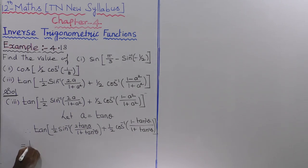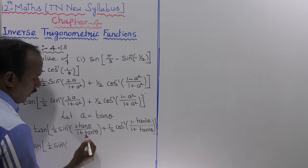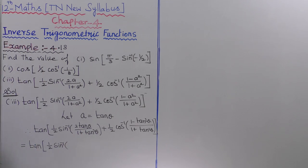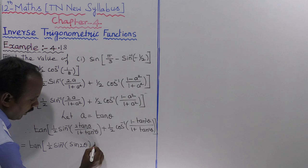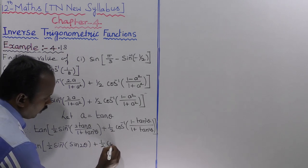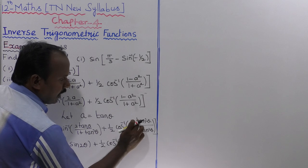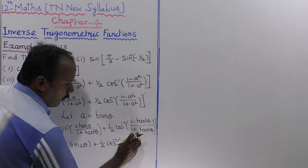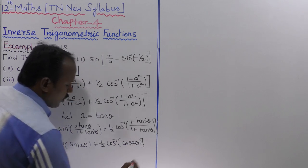That is equal to tan of into 1 by 2 sin inverse of 2 tan theta divided by 1 plus tan square theta, so that is equal to sin 2 theta — this is the formula of sin 2 theta. Next plus 1 by 2 into cos inverse of 1 minus tan square theta whole divided by 1 plus tan square theta, which is equal to cos 2 theta — that is the formula of cos 2 theta.